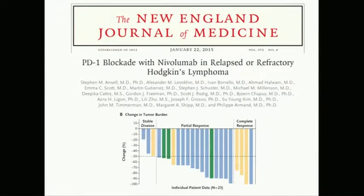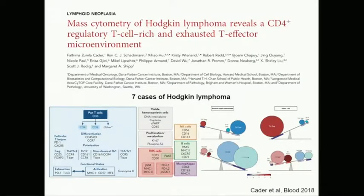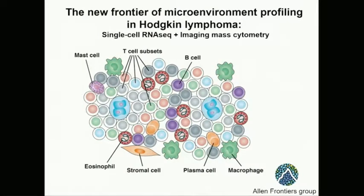This success in Hodgkin lymphoma is quite intuitive in the context of its microenvironment biology — there is something to be disrupted in terms of crosstalk. Currently, we use mass cytometry for deeper interrogation of microenvironment-related phenotypes, including studies from Boston published last year. Now, through the Allen Frontiers Group-funded program, we are attempting an even deeper dive through single-cell RNA sequencing and adding the spatial layer via imaging mass cytometry.